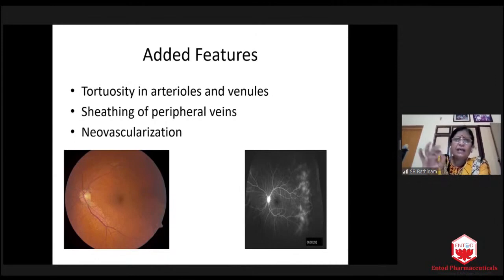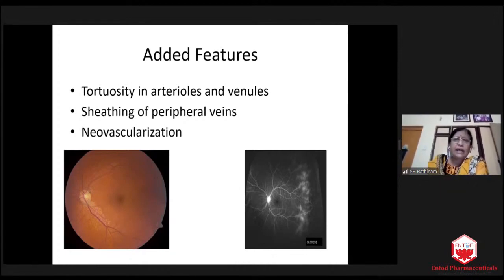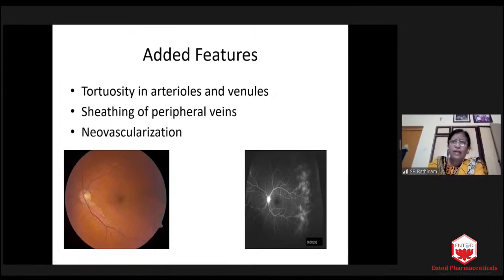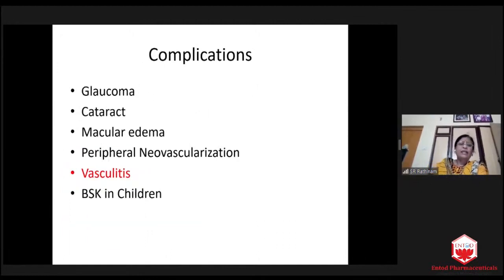In fact, FFA should be done every year whether the patient is symptomatic or not. We have to take care of these patients till they become 16 or 18 years of age. Because vascular occlusion is common and neovascularization is common. Once they have neovascularization, invariably they bleed. Then retinal traction, detachment, and phthisis. Intermediate uveitis in children is a blinding disease — we have to be very careful. They can develop glaucoma, cataract, macular edema, neovascularization. Vasculitis is the most important one.